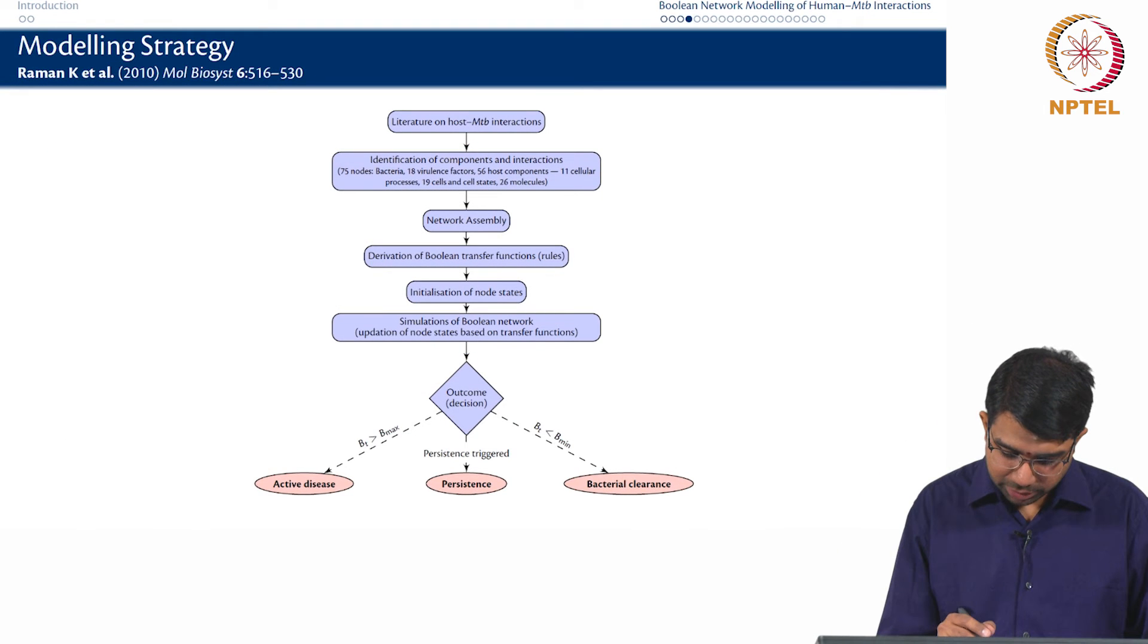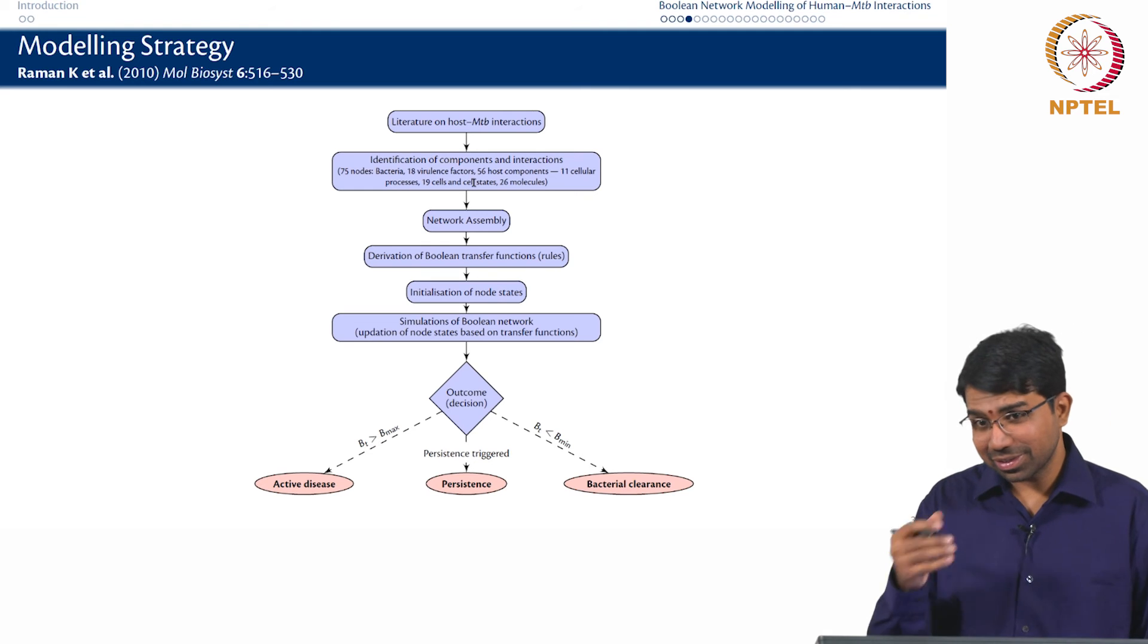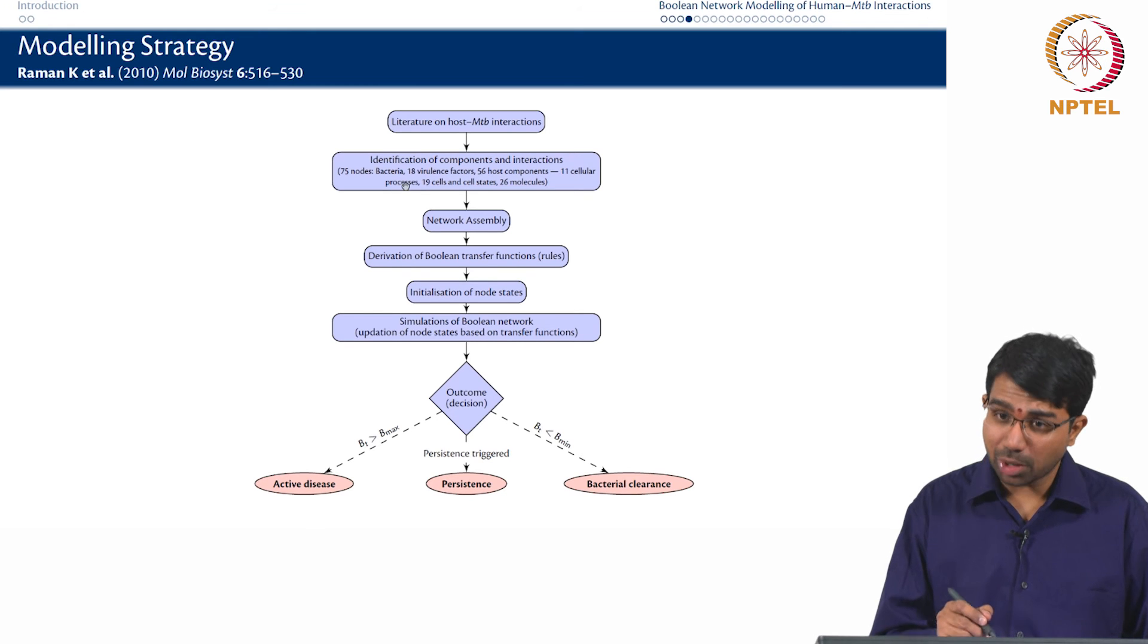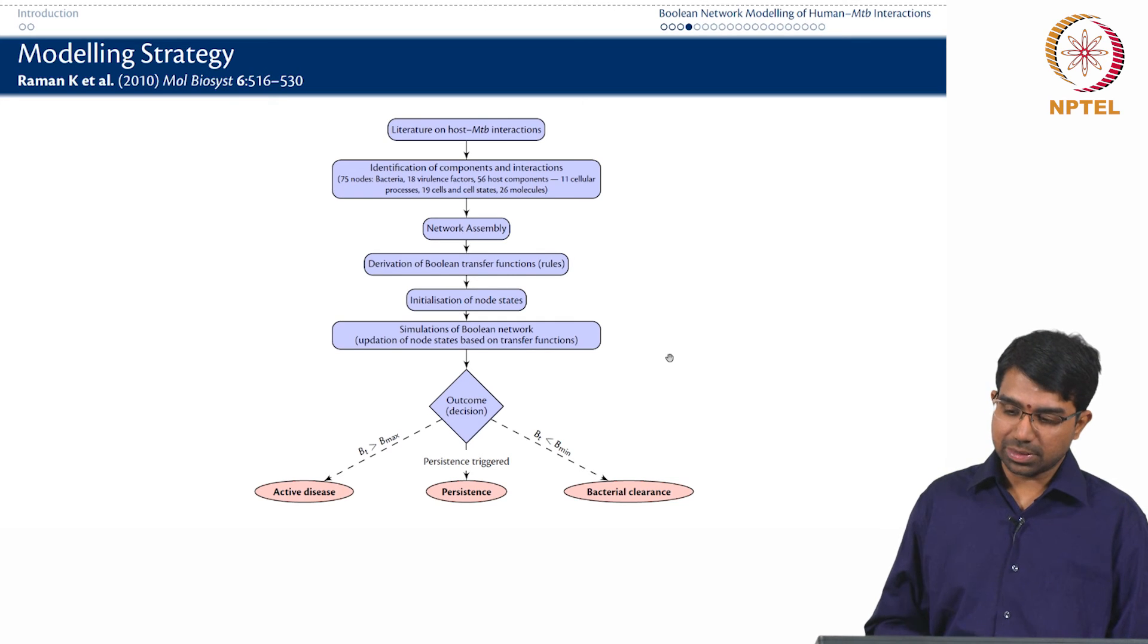So there are 75 nodes including bacteria, 18 virulence factors. These are actually from the bacteria. So these are bacterial cell and bacterial molecules inside the bacterial cell, 56 host components including 11 cellular processes, 19 cells and cell states and 26 molecules themselves.